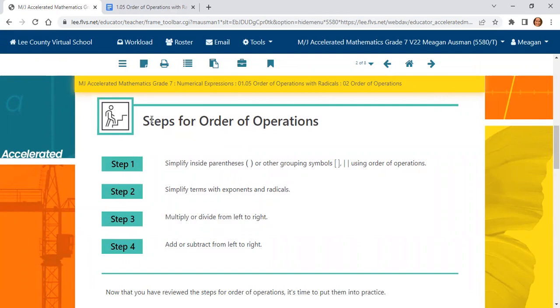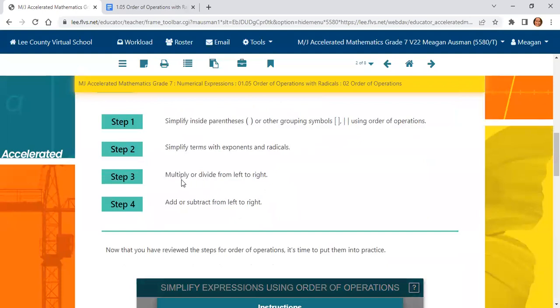Now on your note-taking guide, please write down the steps for order of operations. Step one, simplify inside the parentheses, brackets, or absolute value symbols. Step two, simplify terms that have exponents or radicals. Step three, multiply or divide from left to right. And the final step four, add or subtract from left to right.